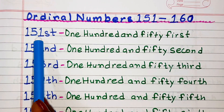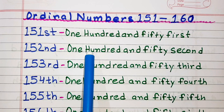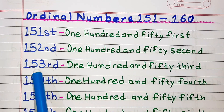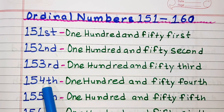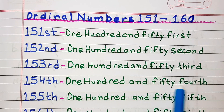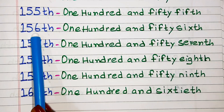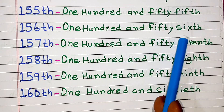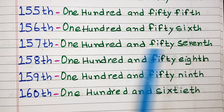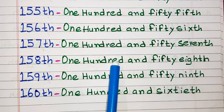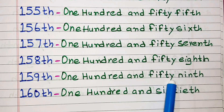Ordinal numbers from 151 to 160. 151st. 152nd. 153rd. 154th. 155th. 156th. 157th. 158th. 159th. 160th.